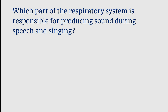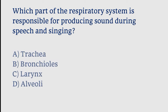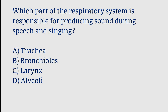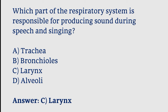Which part of the respiratory system is responsible for producing sound during speech and singing? Options: trachea, bronchioles, larynx, alveoli. The correct answer is option C. The larynx is the part of the respiratory system responsible for producing sound during speech and singing.